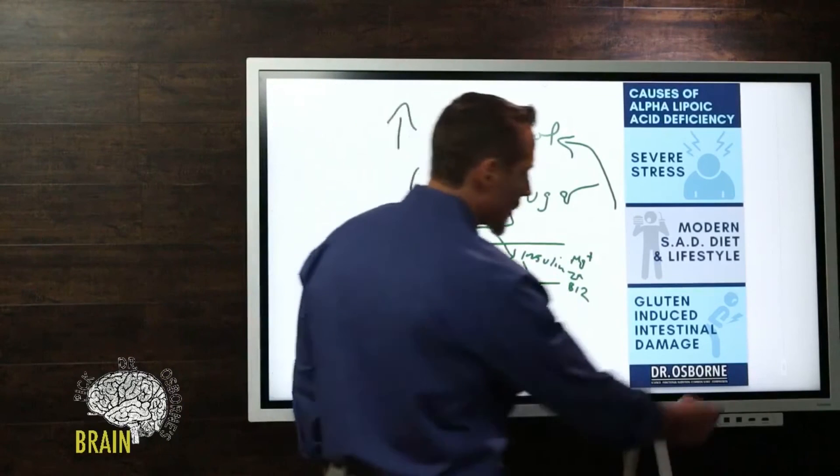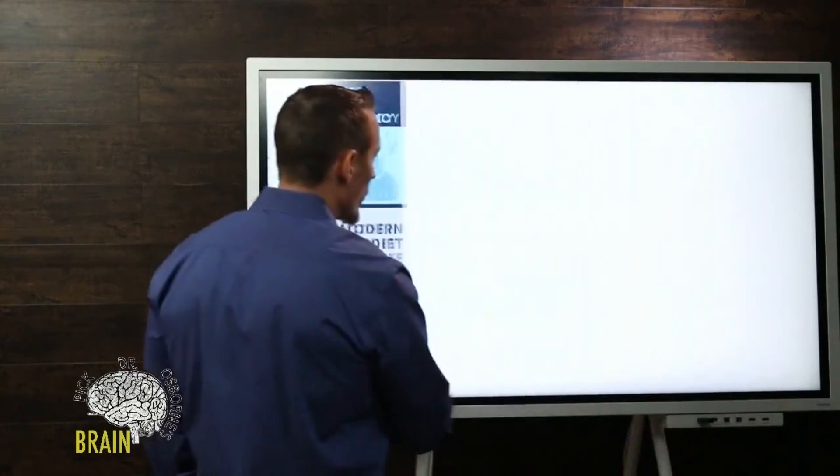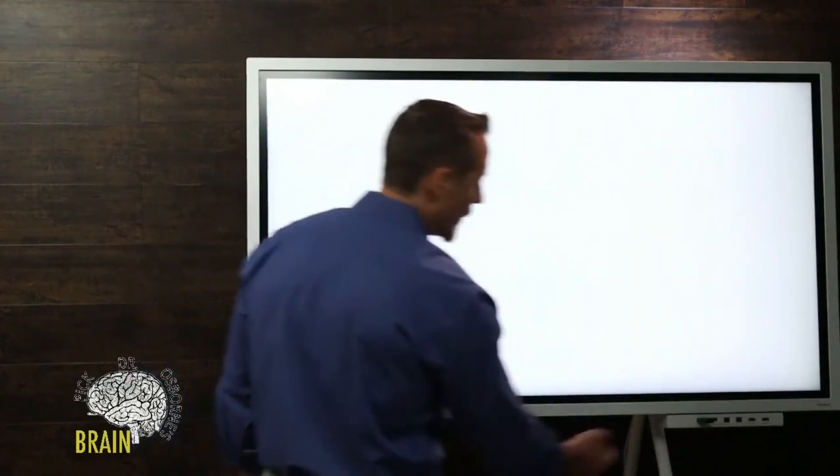One of the other things that I see frequently just because of my expertise is gluten-induced intestinal damage. Gluten-induced intestinal damage leads to malabsorption and malnutrition. You can get some alpha lipoic acid in your diet. Don't forget to check out the rest of the series, make sure you hit subscribe below, and as always thanks for tuning in.